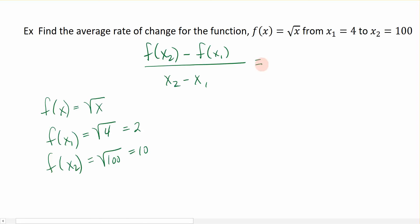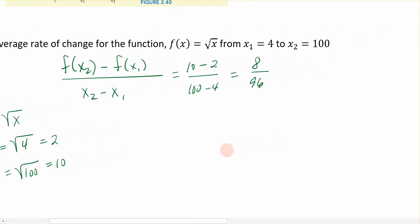So now this becomes my function evaluated at x2, which is 10, minus my function evaluated at x1, which was 2, all divided by x2, which is 100, minus x1, which is 4. So 10 minus 2 is 8, divided by 100 minus 4, which is 96. And I'm going to put this in a reduced fraction form, which would be 1 twelfth.